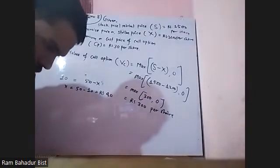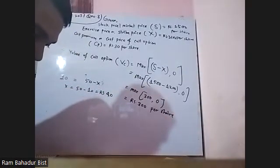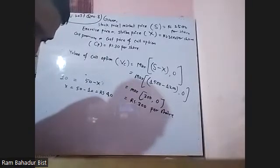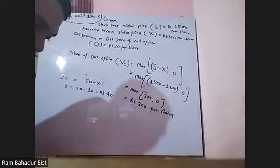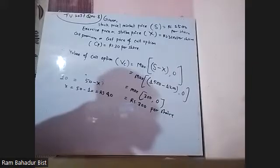Exercise price — the ABC company, the stock price. Call option on a stock with an exercise price, selling at 50.